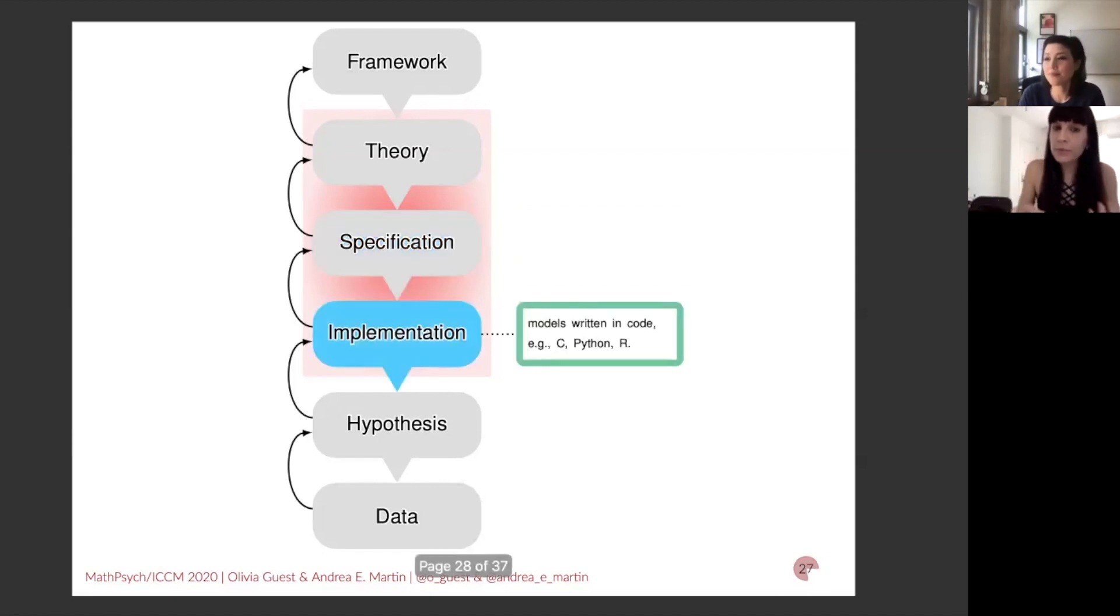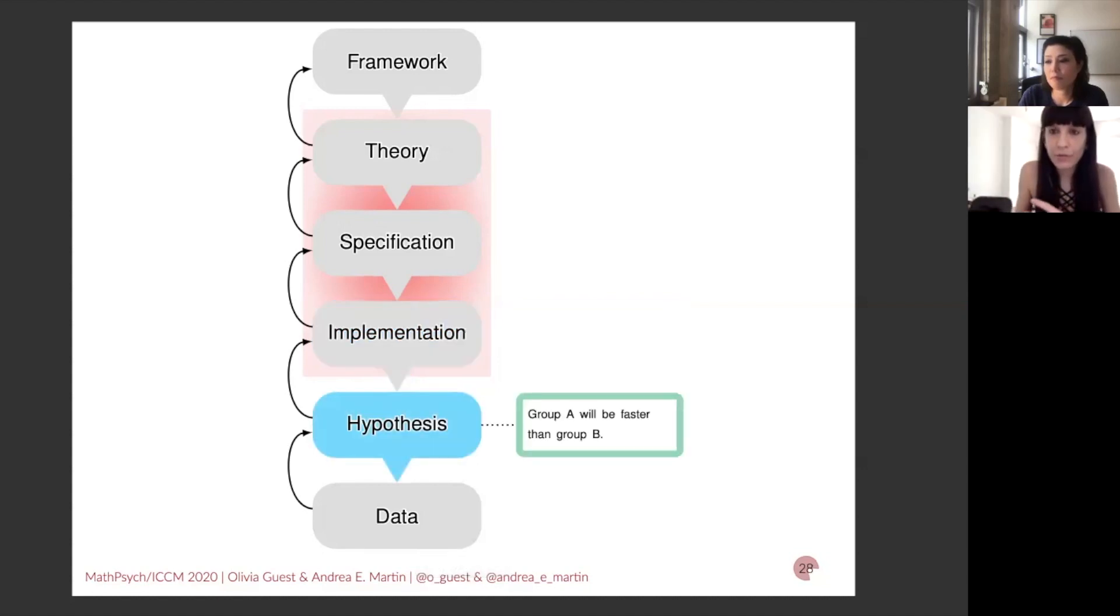And then from a spec, we can move to implementing things. So transforming these formal ideas, exactly like we did with the pizza example, into code. And let's not forget that these connections are bi-directional. So when you refine something and turn it into code, you can pop back up if you believe that that is important to do so and refine your specification or theory and so on. And then as the output of the implementation, we can get very simple things to test. Like for example, group A will be faster than group B or the pizza orders. So one order of pizza will contain more food than another and so on. And then it's very straightforward to design an experiment and collect data that attempts to answer the simple hypothesis question.